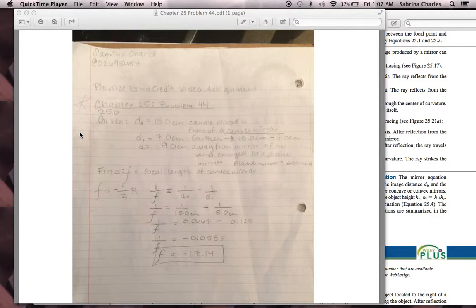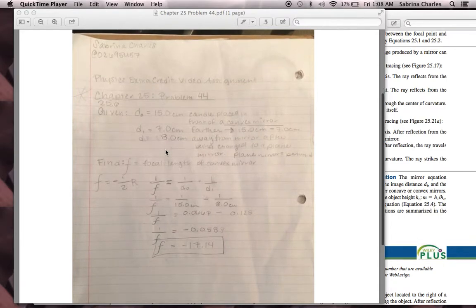So, we have the distance of the object, which is 15 centimeters, and that is the candle that's placed in front of the convex mirror. And then we have the distance of the image, which is 7.0 centimeters further. In order to calculate that, you subtract the 15 minus 7.0 centimeters, and that gives you the final distance image, which is 8.0 centimeters.